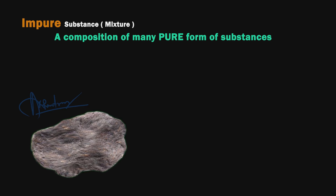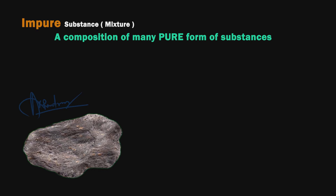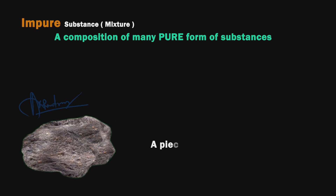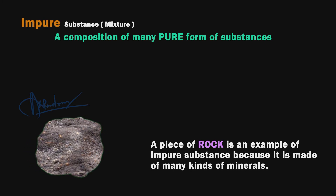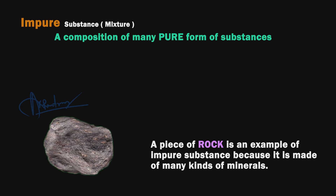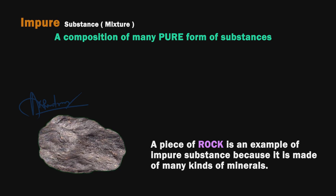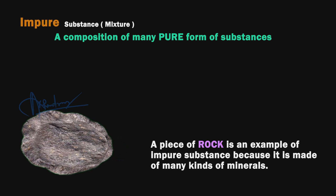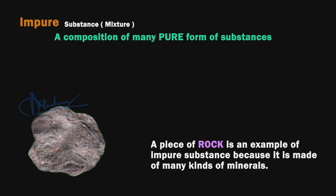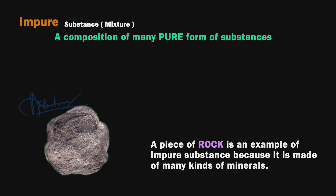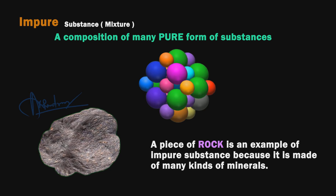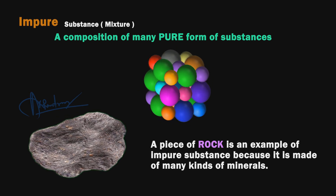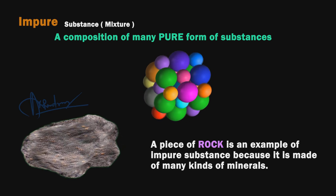A mixture is a composition of many pure forms of substances. A piece of rock is an example of an impure substance because it is made up of many kinds of minerals. Minerals are the building blocks of any kind of rock. If you look closely, you can find that in a piece of rock, particles of many pure substances are composed in different ratios and proportions.